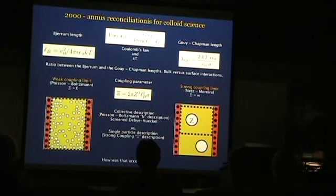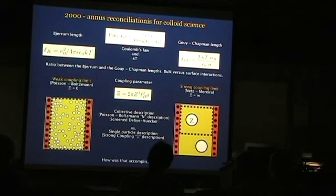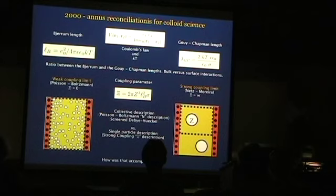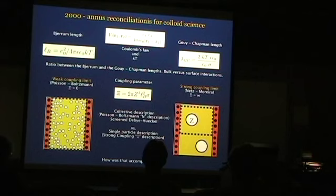In the year 2000, it became clear that it's not completely crazy to expect attractive interactions within highly charged systems. If you combine Coulomb's law with the kT of energy and assume planar charged surfaces, you can define two length scales. One is the Bjerrum length — the distance between two charges at which the Coulomb interaction energy equals kT. For aqueous solutions, that's about 7.4 to 7.5 ångströms. The other is the Gouy-Chapman length, defined as the separation between a point ion and a uniformly charged surface at which the electrostatic interaction energy equals kT.